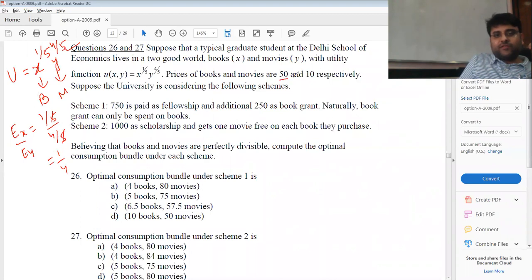Price of the book is 50. Price of the movies is 10. Scheme 1.